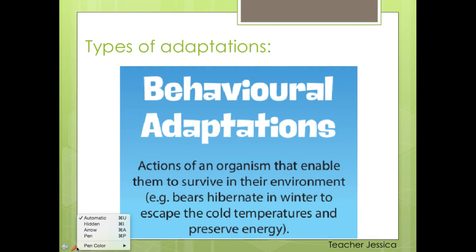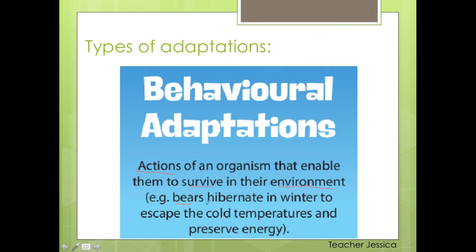Now we are moving on to another type of adaptation — it is called behavioral adaptation. Behavioral means it's related to the actions that animals and plants take to try to survive in the environment. For example, bears hibernate in the winter to escape the cold temperatures and preserve energy. I like to say this process is just like when you put your cell phone in airplane mode — you're trying to save energy. Your cell phone is still alive, and you don't have a place to charge it, so you put it in airplane mode.